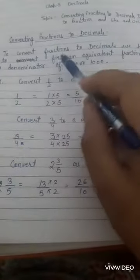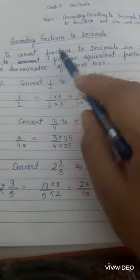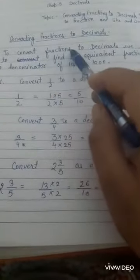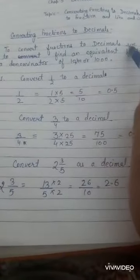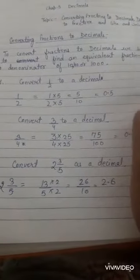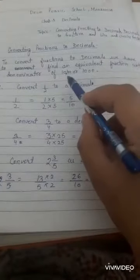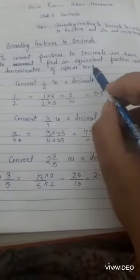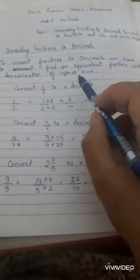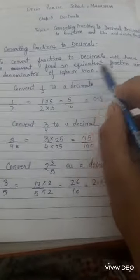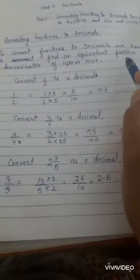If we want to convert fractions to decimals, we need to find an equivalent fraction with a denominator of 10, 100, or 1000. We already know how to find equivalent fractions.